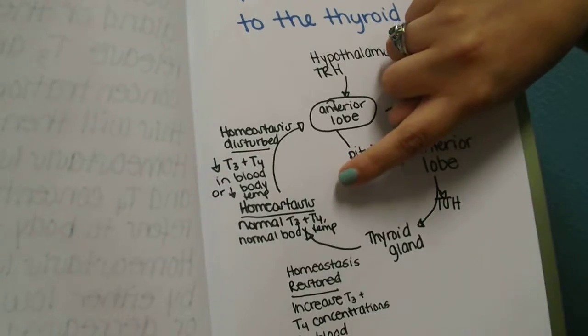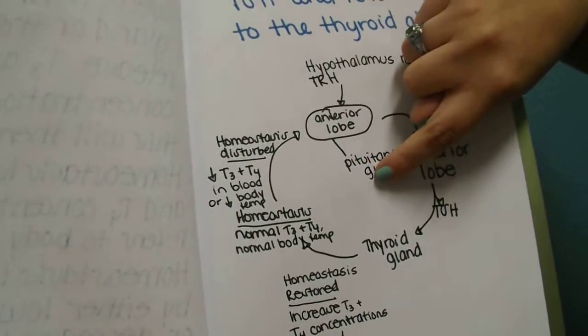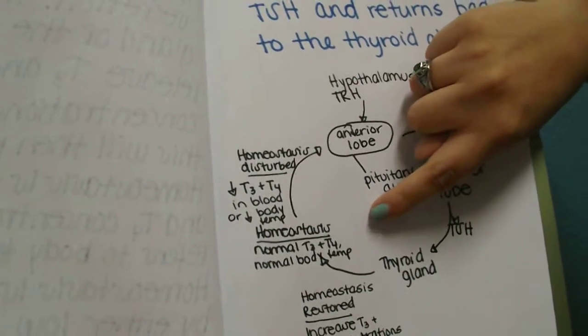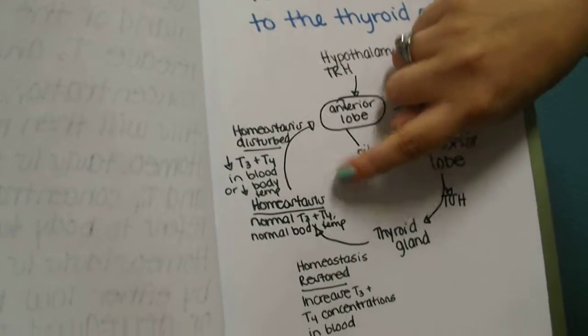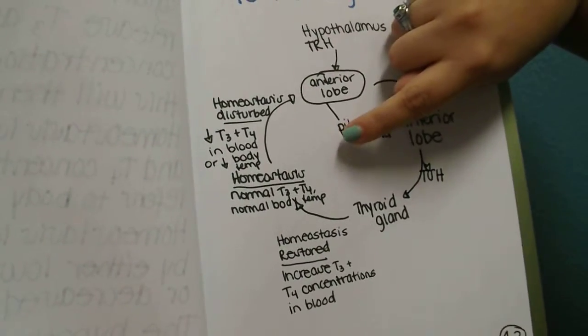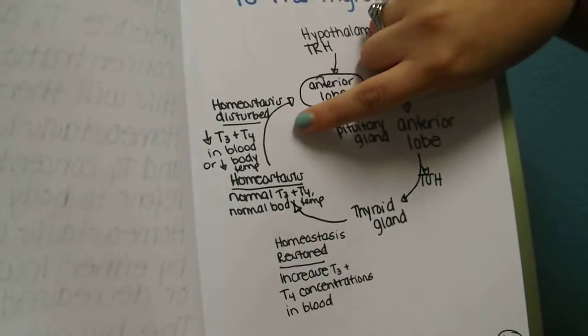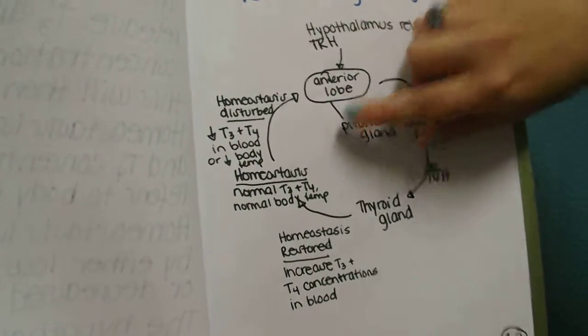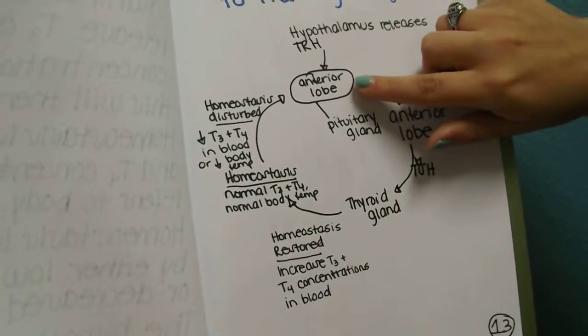After this, homeostasis is reached, so normal T3 and T4 and normal body temperature. After this, the homeostasis then becomes disturbed, so lower T3 and T4 in the blood or lower body temperature, which then will bring it back to the anterior lobe.